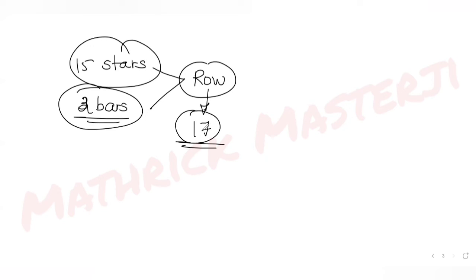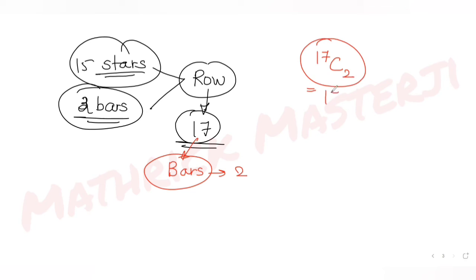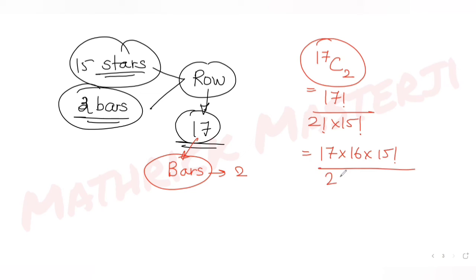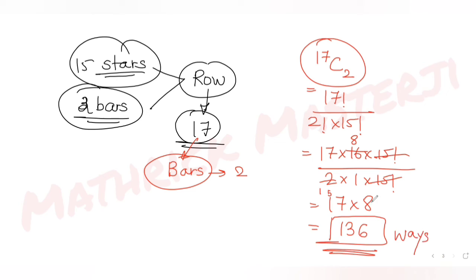Out of these 17 objects, we choose 2 positions to place the bars. That can be done in 17C2 ways. Calculating: 17C2 = 17! / (2! × 15!) = (17 × 16) / (2 × 1) = 17 × 8 = 136.